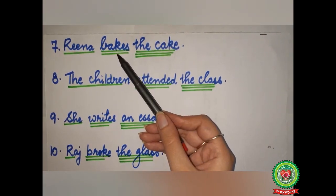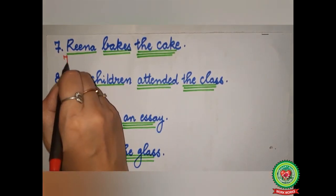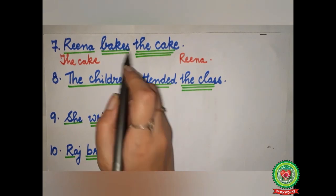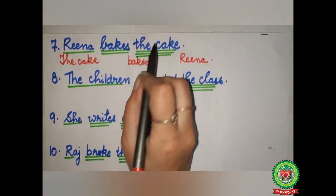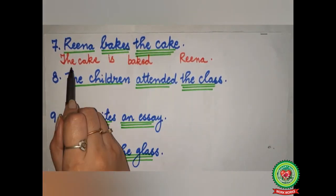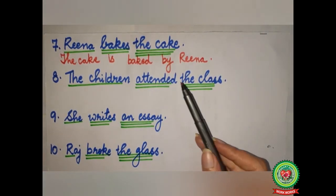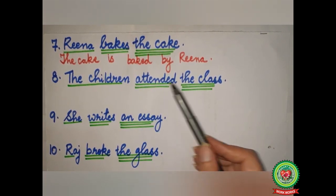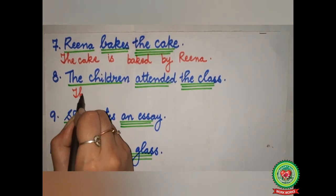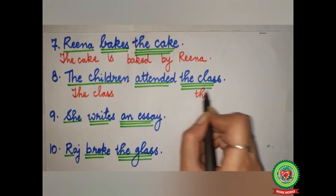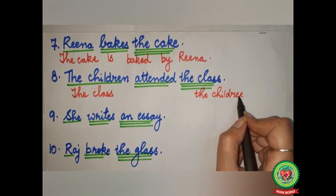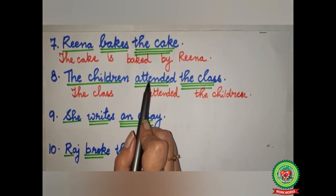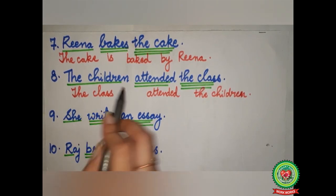Example: 'Rena bakes the cake.' Rena — subject, single underline. 'Bakes' — double underline. The cake — triple underline. The cake will come in the beginning, Rena will go to the last. 'Bakes' will change into 'baked.' 'Bakes' is present form, so we use 'is.' Answer: 'The cake is baked by Rena.' Next: 'The children attended the class.' The class will come in the beginning, the children will go to the last. 'Attended' is already in V3 form. 'Attended' is past tense, so we add 'was.' Answer: 'The class was attended by the children.'